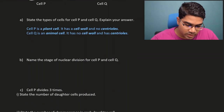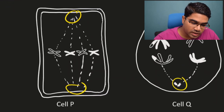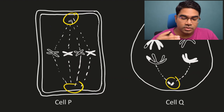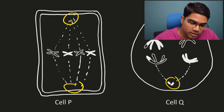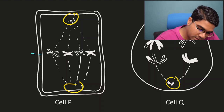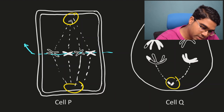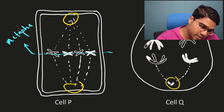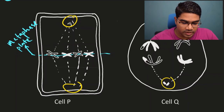Name the stage of nuclear division for cell P and Q. Let's look at cell P for a moment. Whenever you see the chromosomes lined up at the center of the cell, this is called the metaphase plate, at the equator of the cell. Then it is metaphase. So this is clearly metaphase.